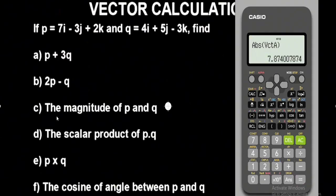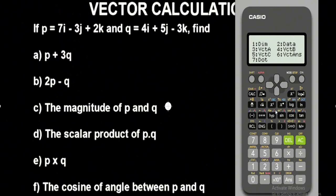Now for the magnitude of vector Q, go back to Shift then the Abs button. Select vector B which is replacing Q on the calculator: press Shift 5 and option 4 for vector B. Close the bracket and press equals. This gives you the magnitude of vector Q. We're making progress now.